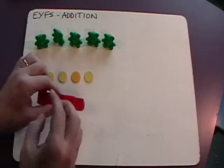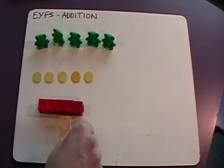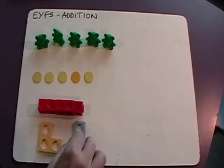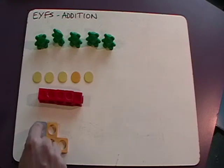And also again we can use Numicon tiles with the three tile and a two tile. It's easier to put the two tile there and then we can count up: one, two, three, four, five all together.